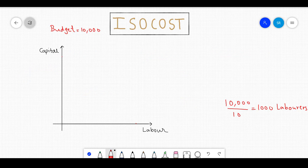If you plot this on a graph with labour on the x-axis and capital on the y-axis, then you can plot 1,000 somewhere here. Notice that if you spend your budget only on buying labour and no capital, then this point represents 1,000 labour and 0 capital.